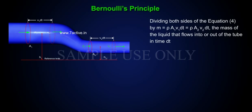Dividing both sides of equation 4 by M is equal to rho A1V1DT is equal to rho A2V2DT, the mass of the liquid that flows into or out of the tube in time DT.